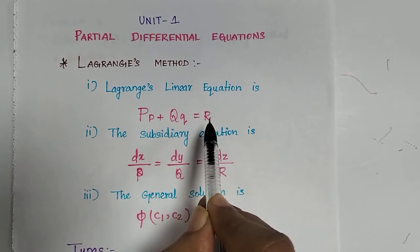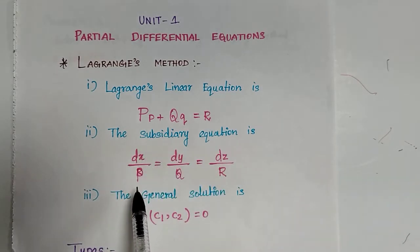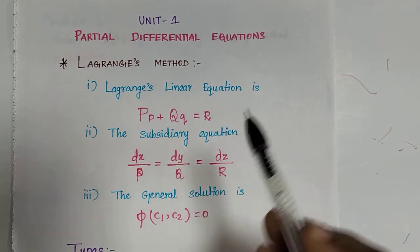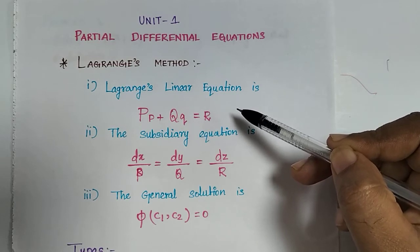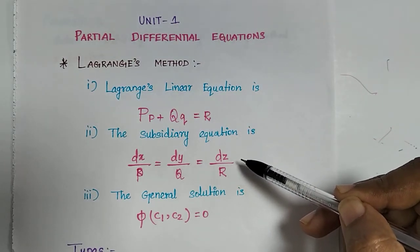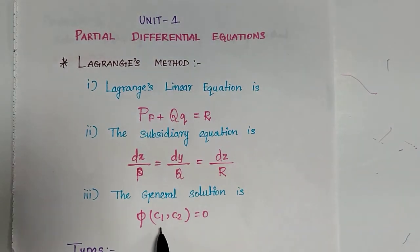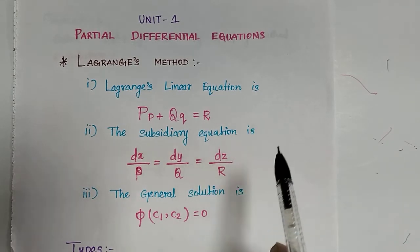To solve Lagrange's linear equation, you need to solve the subsidiary equation, which is dx divided by capital P equals dy divided by capital Q equals dz divided by capital R. After identifying capital P, Q, R and substituting into the subsidiary equation, you solve it to get two values: c1 and c2.